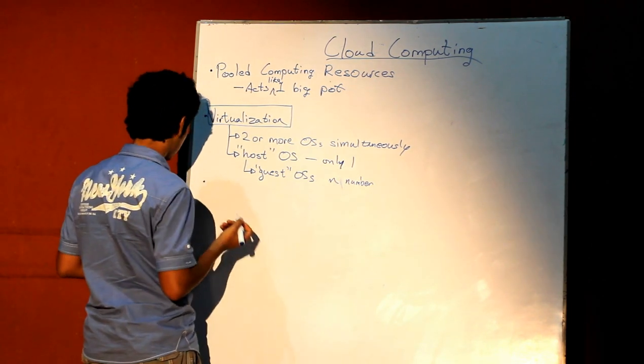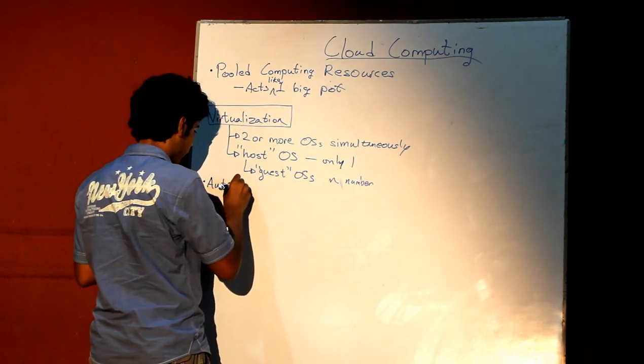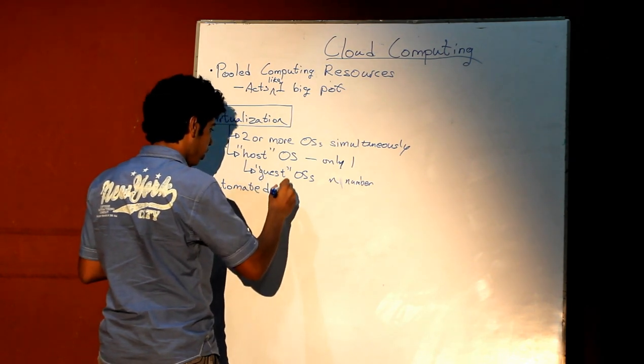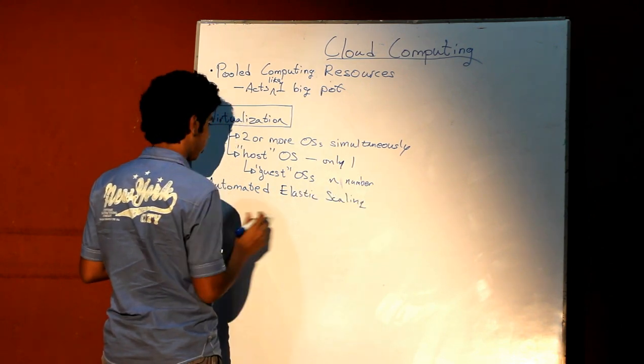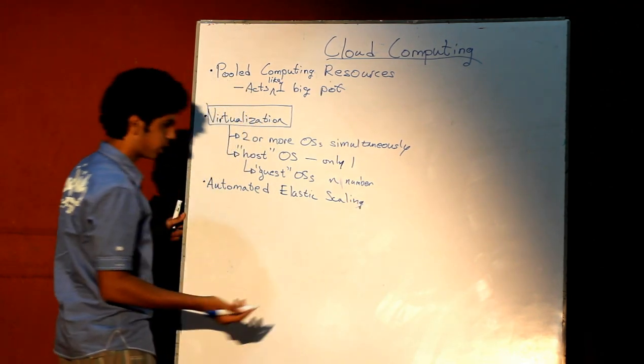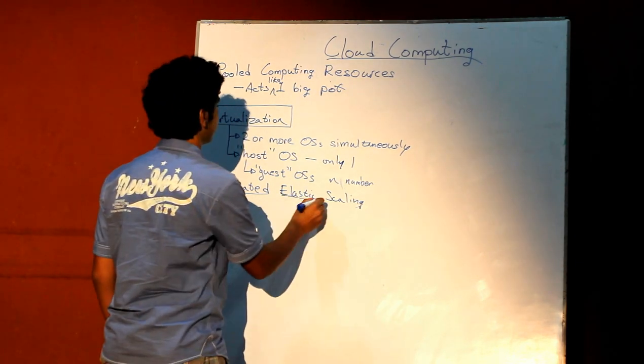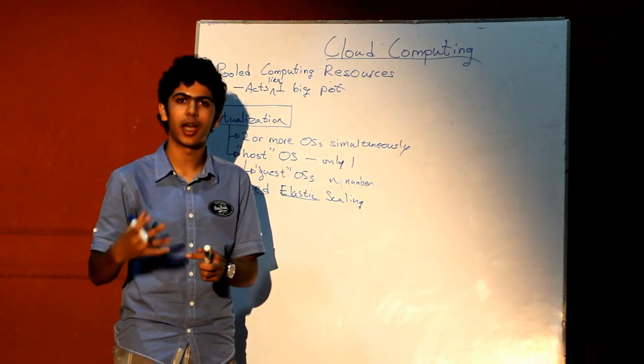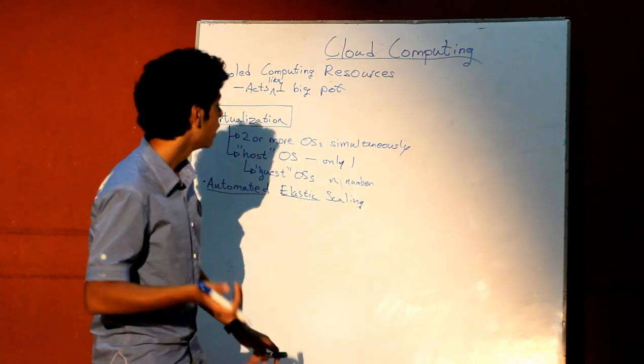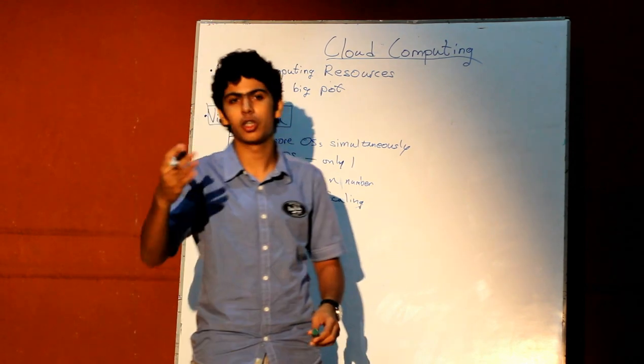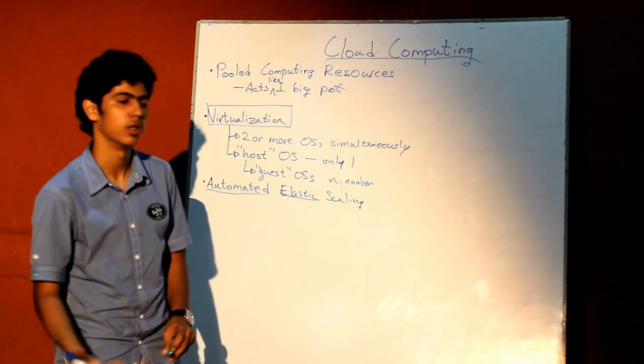The third is the defining factor of the cloud. This is the reason people migrate to cloud architectures, and it's called automated elastic scaling. To understand this term, you have to understand the words that make it up. Automated is self-explanatory - it doesn't require human intervention. Elastic means it can change dynamically and quickly in both directions, vertical and horizontal. Scaling is just general increase or decrease of resources, or even things like network connectivity, backup power, or electricity.